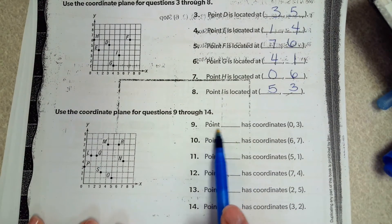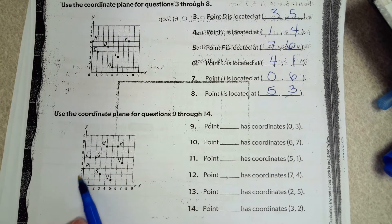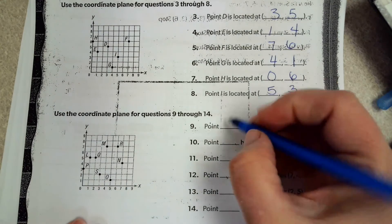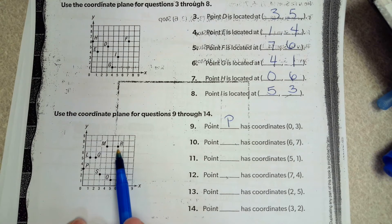Point blank has a coordinate of 0, 3. So over 0, up 3. P. 6, 7, over 6, up 7.